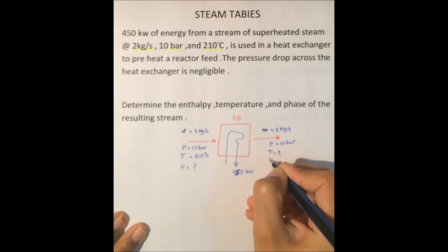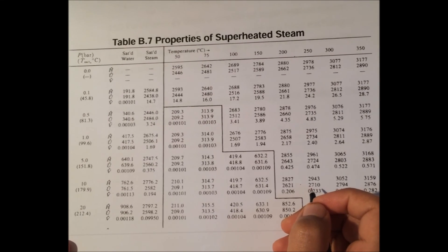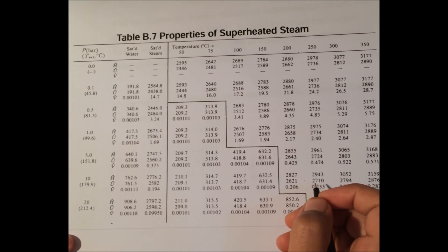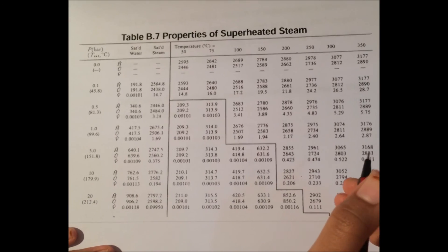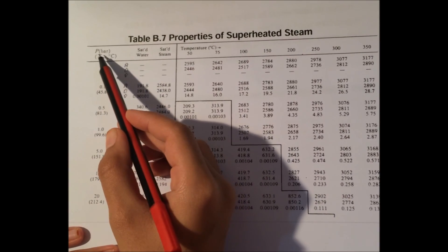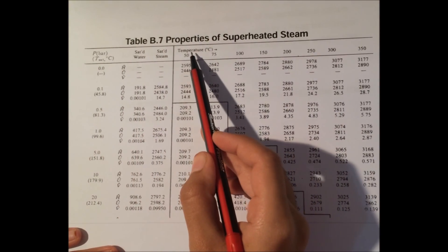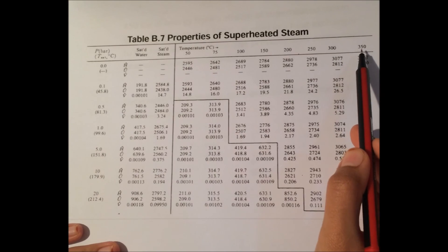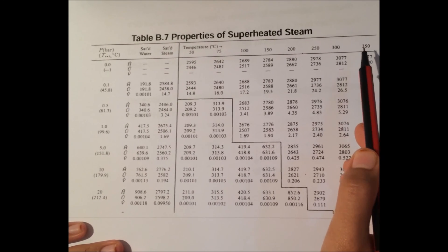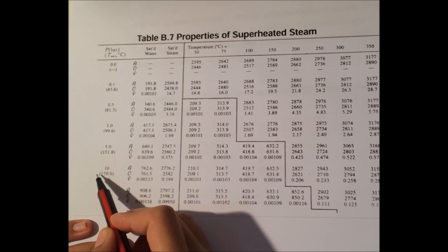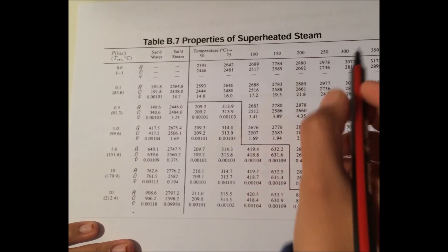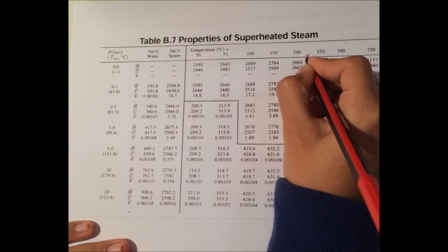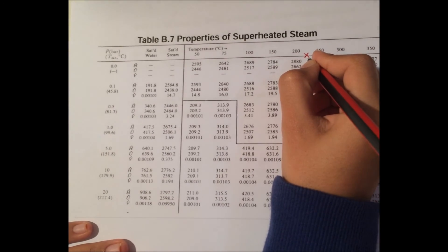The next step is to find the enthalpy of the feed stream. I have this superheated steam table which will help us. The first column is pressure in bars, and here we have the temperature from 50 to 350 degrees Celsius. Our example is at 10 bar of pressure and the temperature is 210, which is between 200 and 250. We need to find the cross between the pressure and temperature.